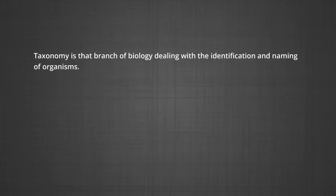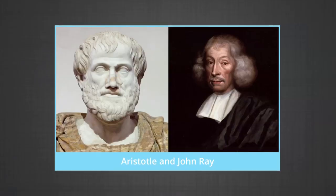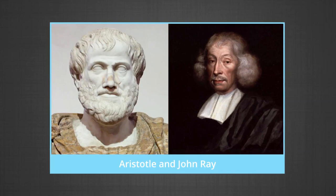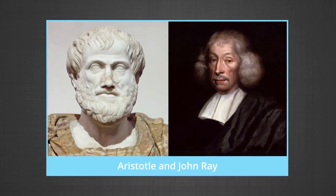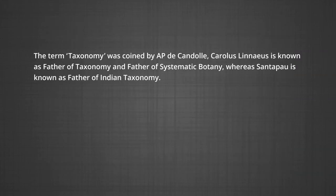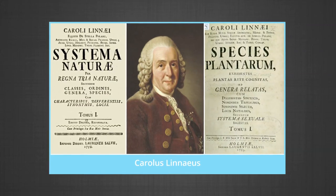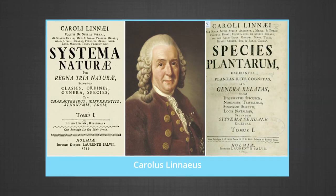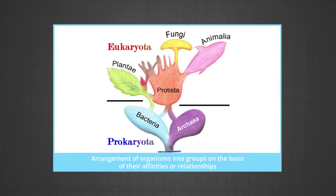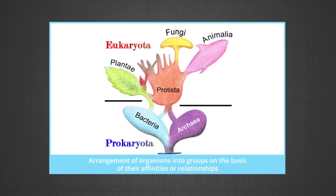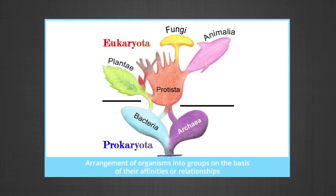Taxonomy is that branch of biology that deals with identification and naming of an organism. The ancient Greek philosopher Aristotle apparently began the discussion on taxonomy. British naturalist John Ray is credited with revising the concept of naming and describing organisms. The term taxonomy was coined by A.P. De Candolle. Carlos Linnaeus is known as the father of taxonomy and the father of systematic botany, whereas Santa Pau is known as the father of Indian taxonomy. During the 1700s, Linnaeus classified all well-known organisms into large groups — the kingdom Plantae and Animalia. Robert Whittaker, in 1969, proposed the five kingdom theory: Plantae, Animalia, Fungi, Protists, and Monera.